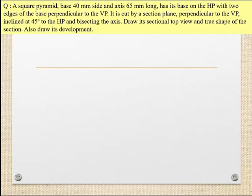A square pyramid with base 40 mm side and axis 65 mm long has its base on HP with two edges of the base perpendicular to the VP. It is cut by a section plane perpendicular to the VP, inclined at 45 degrees to the HP and bisecting the axis. Draw its sectional top view, the true shape of the section, and also draw its development.